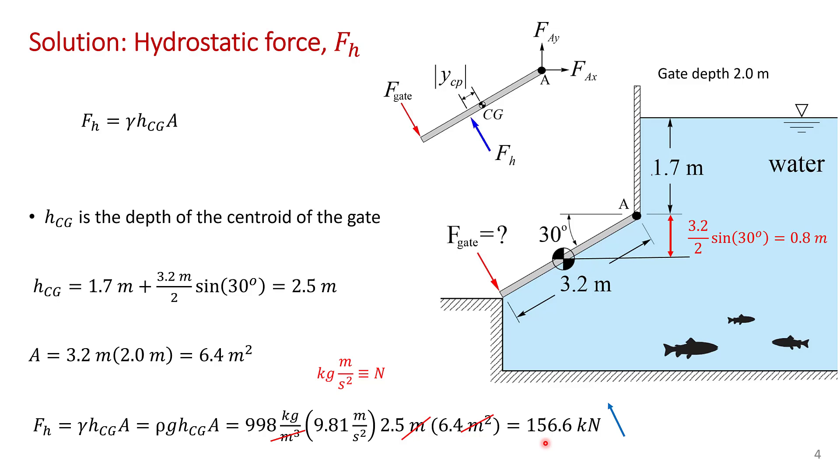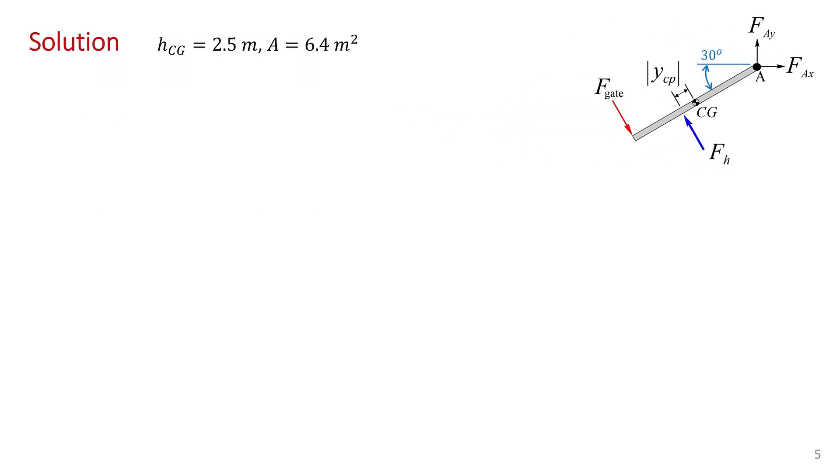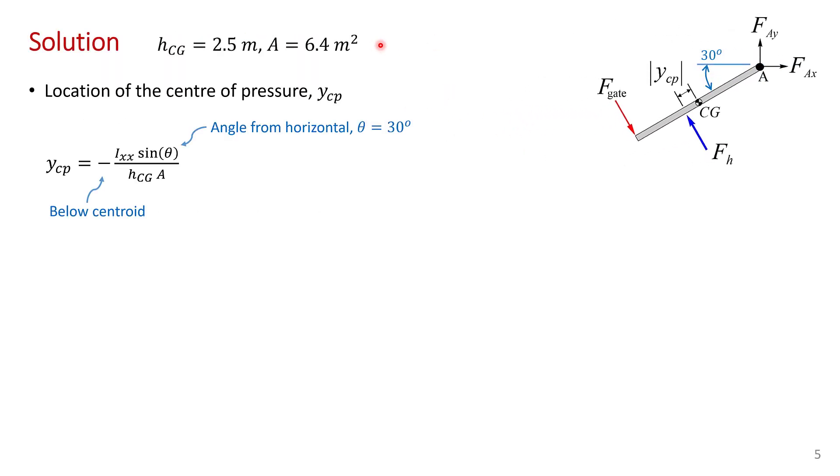Now we just need to find the location of the hydrostatic force. We need to find ycp. And here I've reproduced a couple of things that we've already calculated. The depth of the centroid and the area of the gate. The location of the center of pressure is ycp which is minus ixx sine theta divided by hcg the depth of the centroid and the area of the gate.